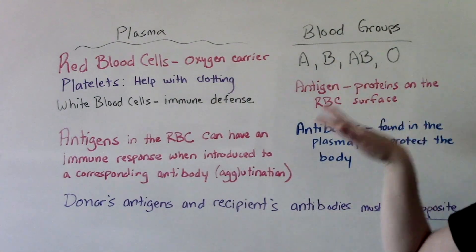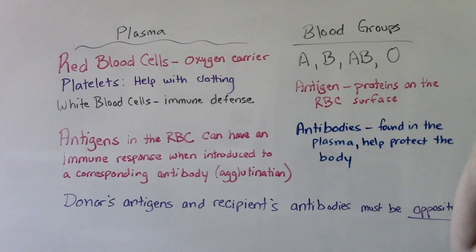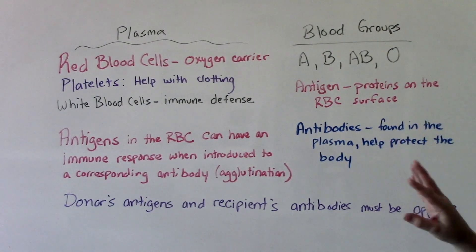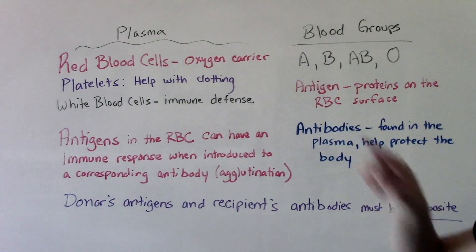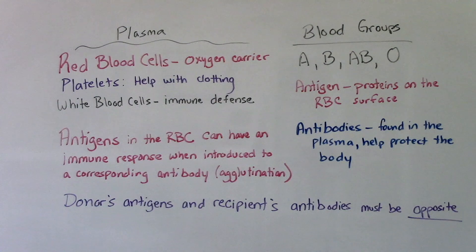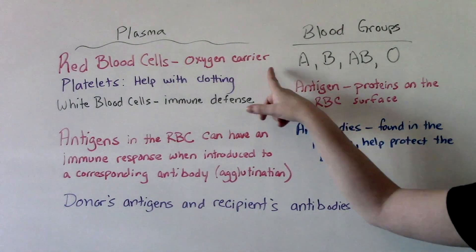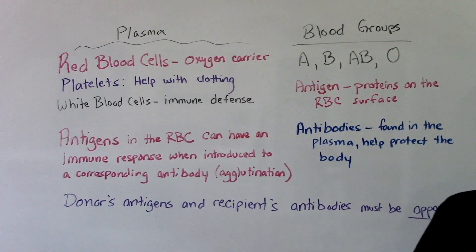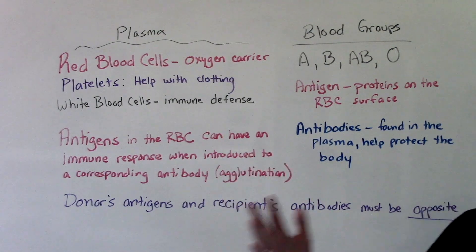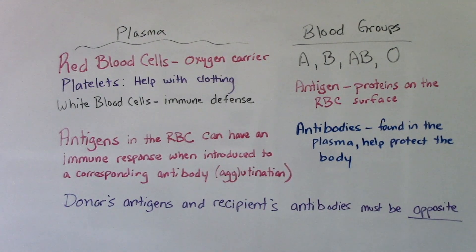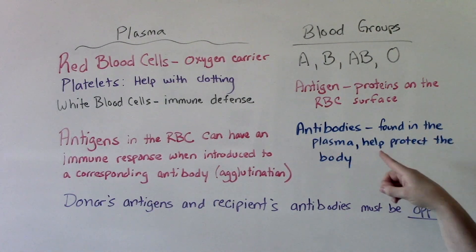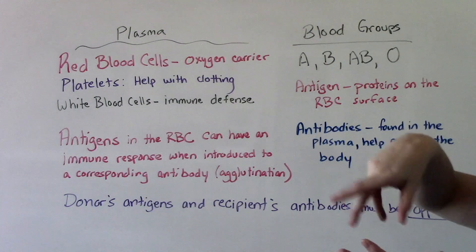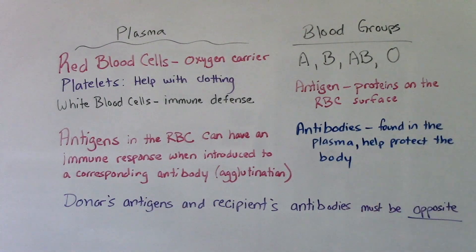Sticking with the blood groups, there are four of them. On our blood, we have something called antigens. Antigens are proteins that are found on the surface of red blood cells. So if you have A antigens on your red blood cells, then you are type A blood. Another important vocab word is antibodies. Antibodies are found in the plasma, surrounding the red blood cells, not attached to them, and they help protect our body from infection.